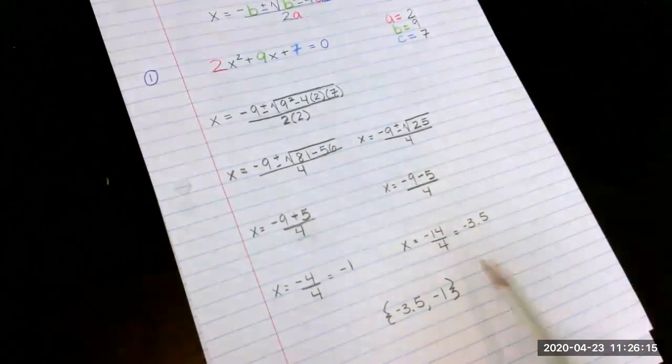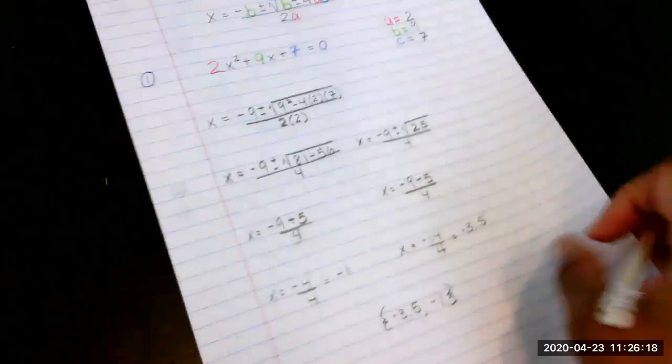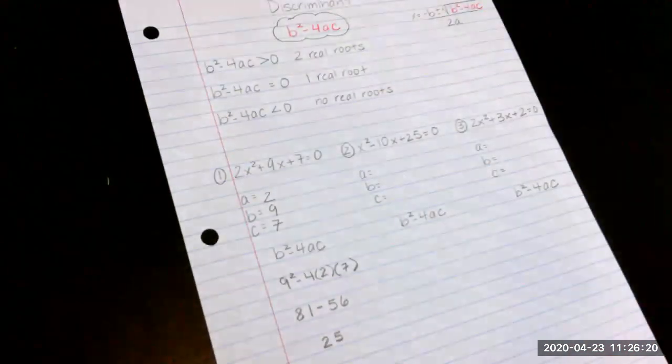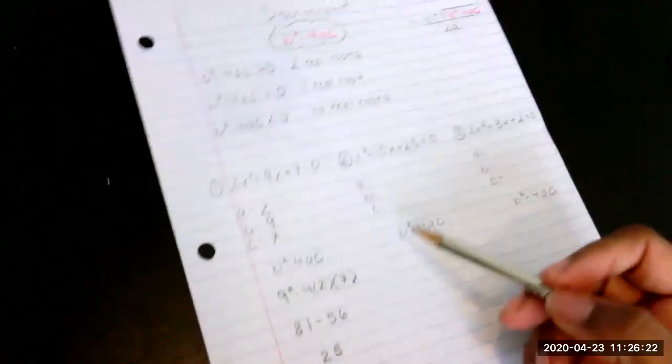So the quadratic formula tells you what those roots are, and the discriminant just tells you how many roots there are. So let's pause the video.